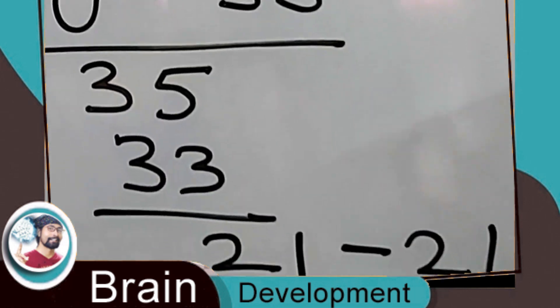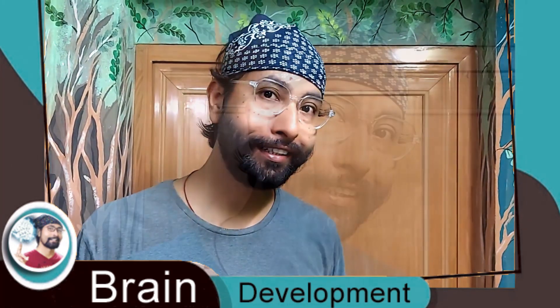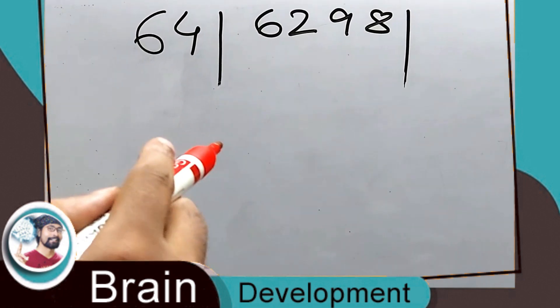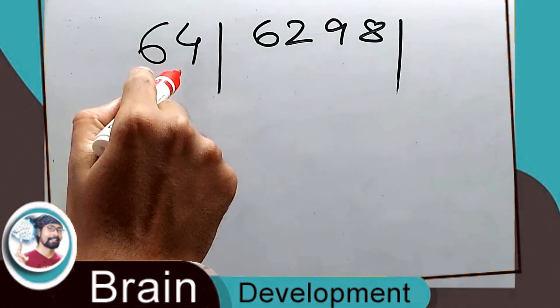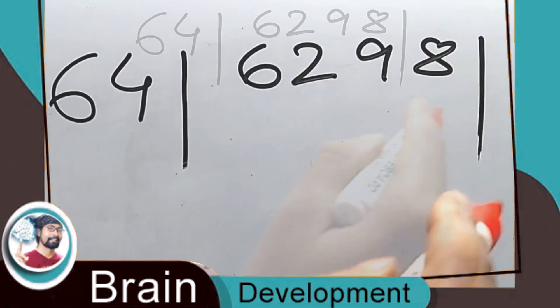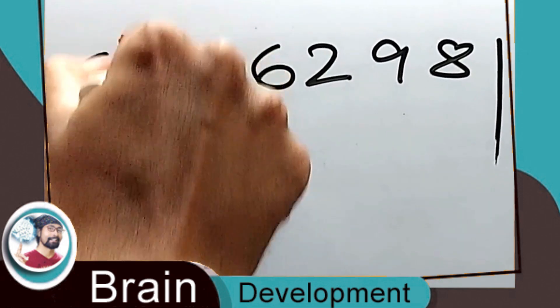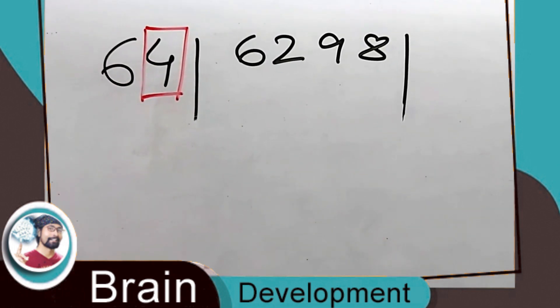Every time you won't get zero — sometimes you'll have a remainder, or maybe you'll have to go further to get decimal numbers. There is one more exception. Let's see: 6298 divided by 64. It's a smaller number, but this time we'll have a remainder or decimal.